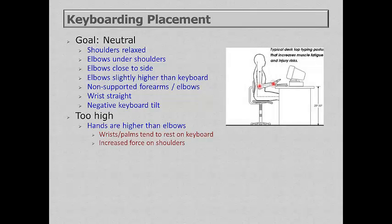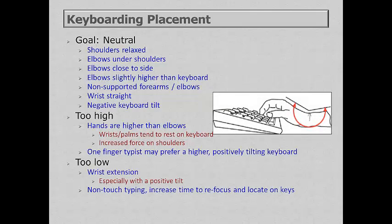If the keyboard is too high, hands will be higher than elbows, causing wrists or palms to rest on the keyboard or desk edge, and it will increase shoulder force. However, a one-finger or hunt-and-peck typist may prefer a higher positively-tilted keyboard due to their increased visual demand of looking at the keyboard then up at the screen. If keyboard placement is too low, we end up in wrist extension — especially with a positively tilted keyboard. If too low for non-touch typing, it increases time to refocus and relocate keys after looking up at the monitor.